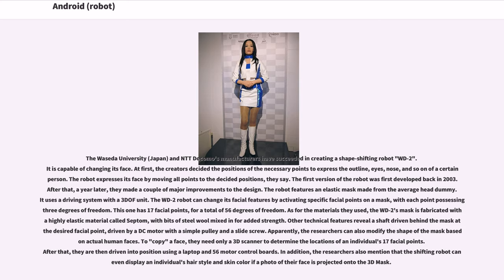Waseda University, Japan, and NTT Docomo's manufacturers have succeeded in creating a shape-shifting robot, WD2. It is capable of changing its face. The creators determined the positions of necessary points to express the outline, eyes, nose, and other features of a certain person; the robot expresses its face by moving all points to the decided positions. The first version was developed in 2003, and a year later major improvements were made. The robot features an elastic mask made from the average head dummy and uses a driving system with a 3-DOF unit. The WD2 can change its facial features by activating specific facial points on a mask, with each point possessing 3 degrees of freedom.